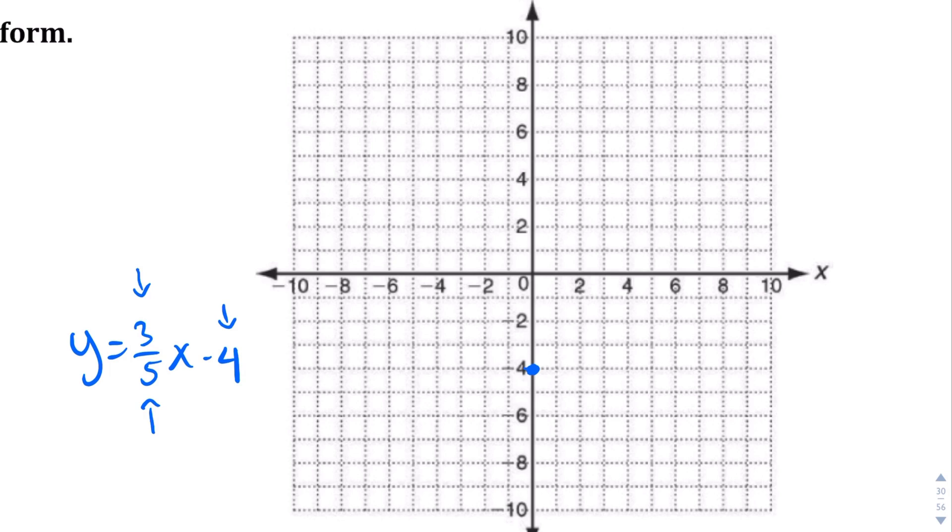Starting from our starting point at negative 4, we're going to go up 3: 1, 2, 3, and to the right 5: 1, 2, 3, 4, 5. So our next point is right there. And from there, if we wanted to add another point, we're going to go up 3: 1, 2, 3, and to the right 5: 1, 2, 3, 4, 5. So our next point is right there.